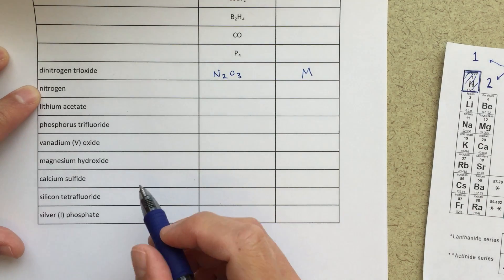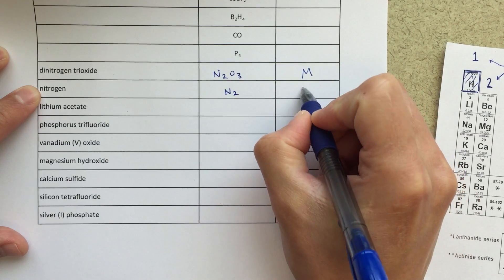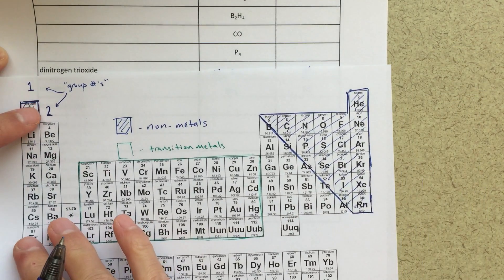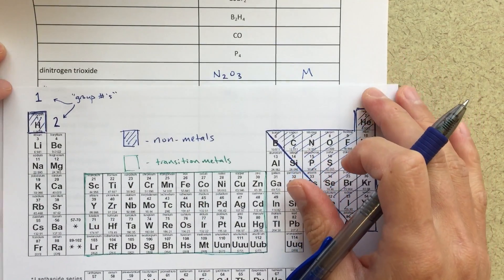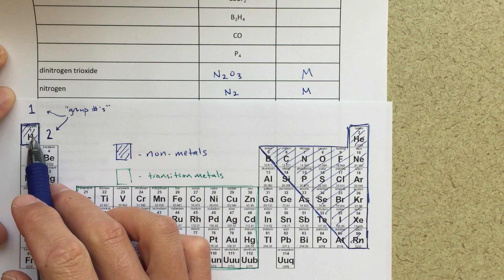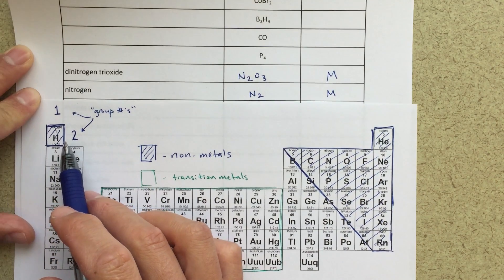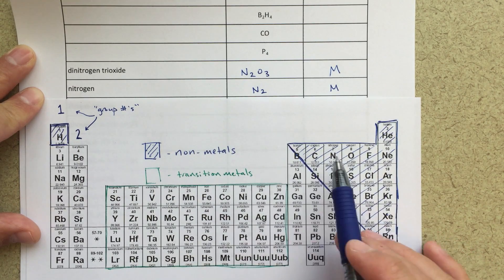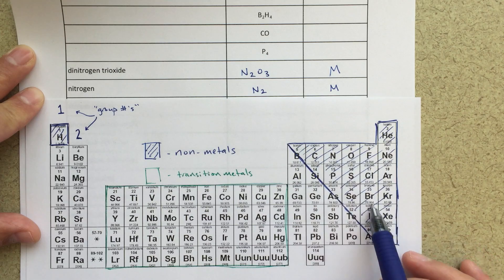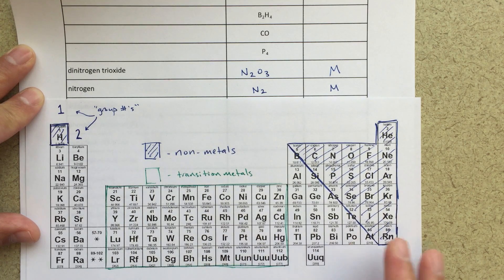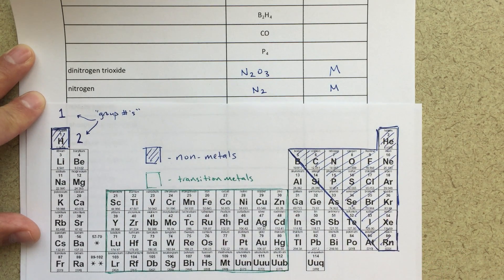Nitrogen is a diatomic gas. The diatomic gases are hydrogen, nitrogen, oxygen, fluorine, chlorine, bromine, and iodine. A way to remember these is to draw a little '7' shape on the periodic table: N, O, F, Cl, Br, I — plus hydrogen. If you find any of these elements in nature, they'll be in their diatomic form, like H2 or N2.